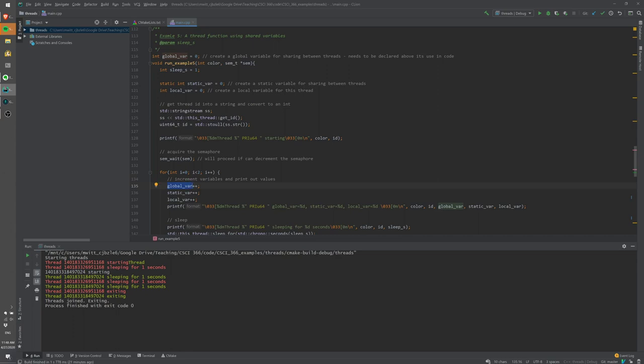Okay, so now inside this run example thread function, we can increment the global variable. We can also increment the static variable which is defined within the run example given the static keyword. And finally, we have a local variable that will be just used by this thread. So, as we run the thread, we are incrementing these variables and we can see whether or not the changes are local or global to the different threads.